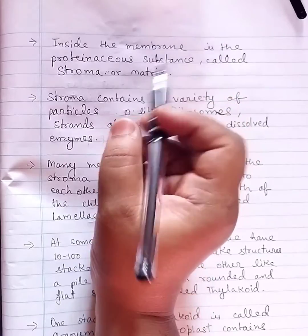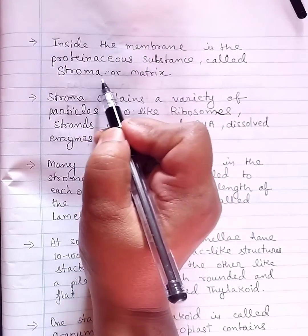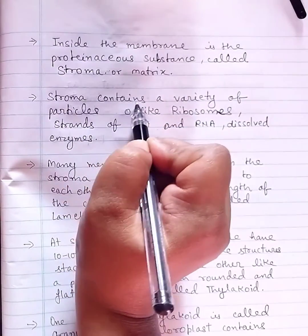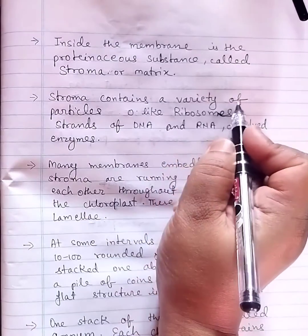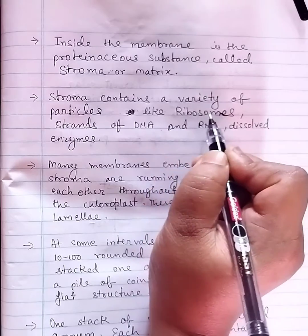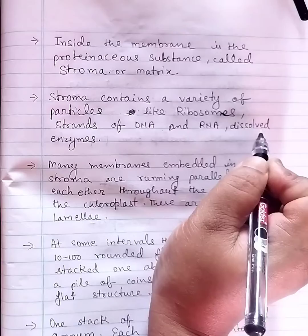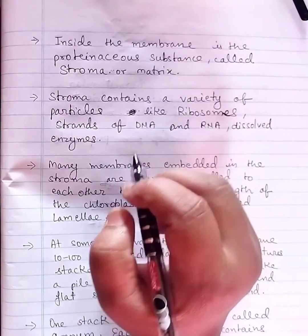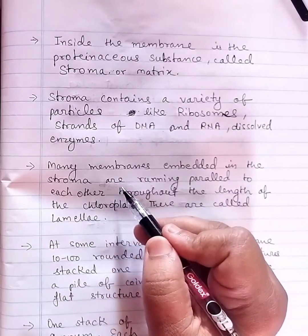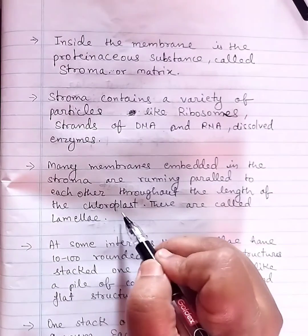Inside the membrane is the proteinaceous substance called stroma or matrix. Stroma contains a variety of particles like ribosomes, strands of DNA and RNA, and dissolved enzymes. Many membranes embedded in the stroma are running parallel to each other throughout the length of the chloroplast.